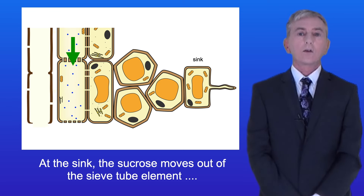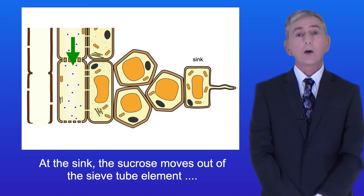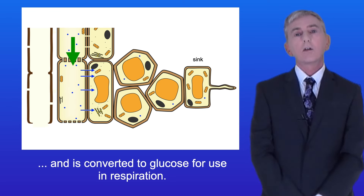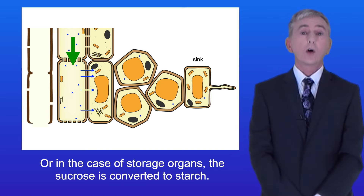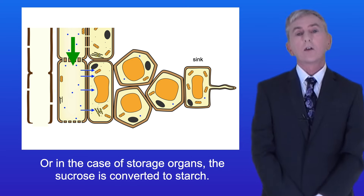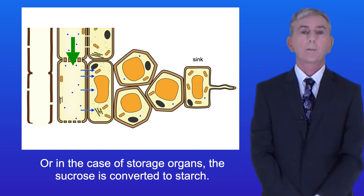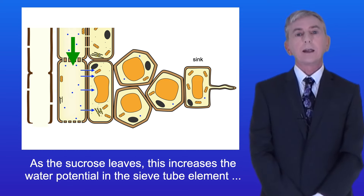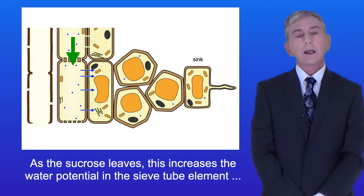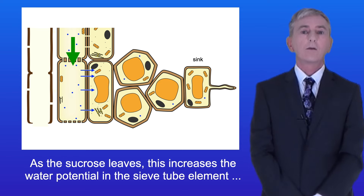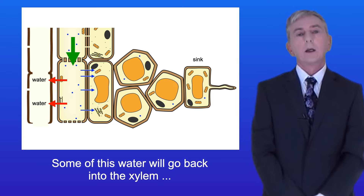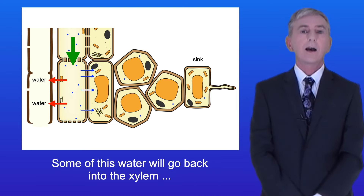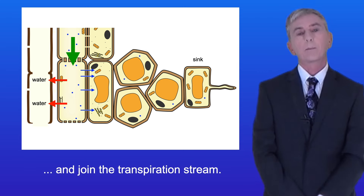At the sink the sucrose moves out of the sieve tube element and is converted to glucose for use in respiration, or in the case of storage organs the sucrose is converted to starch. As the sucrose leaves, this increases the water potential in the sieve tube element, causing water to move out of the sieve tube element by osmosis. Some of this water will go back into the xylem and join the transpiration stream.